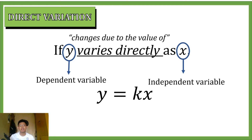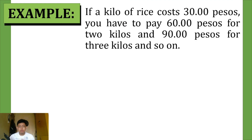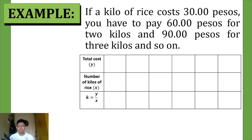For example, if a kilo of rice costs 30 pesos, you have to pay 60 pesos for two kilos of rice and 90 pesos for three kilos, and so on and so forth. Now let's place them in a table of values.